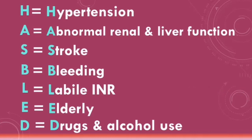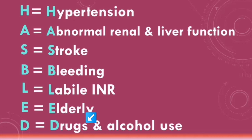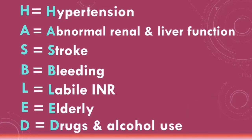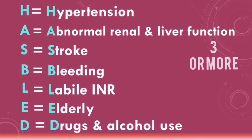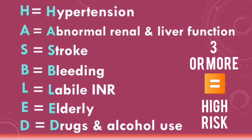Each of these factors scores one point on the HAS-BLED score. Note that if a patient has both abnormal renal and liver function, that scores two points, and if a patient both uses drugs that increase bleeding risk and has significant alcohol use, that also scores two points. Overall, the HAS-BLED score is out of nine points. A score of three or more is considered high risk of bleeding, and it is important to weigh the benefits and risks of anticoagulation for these patients.